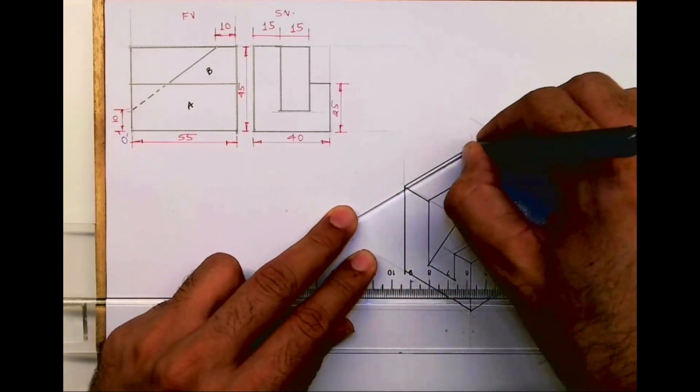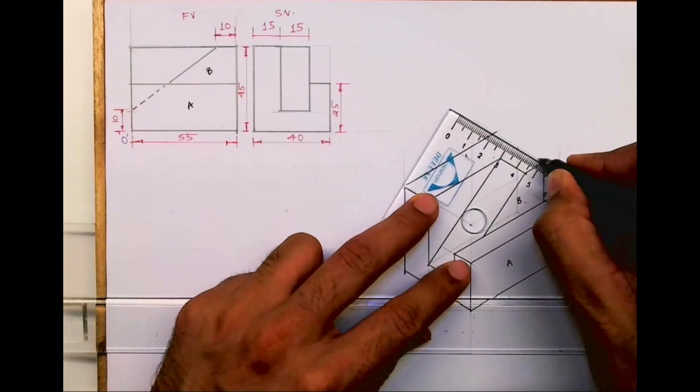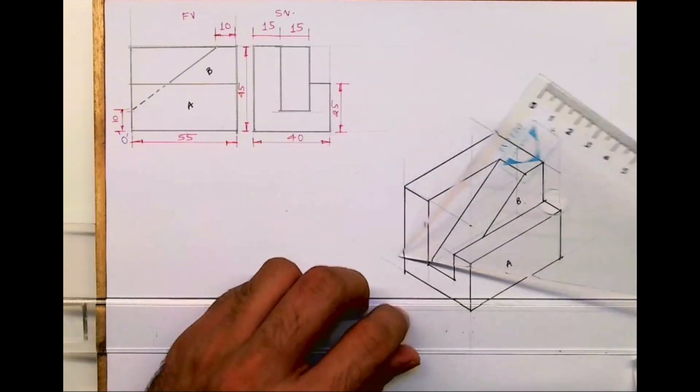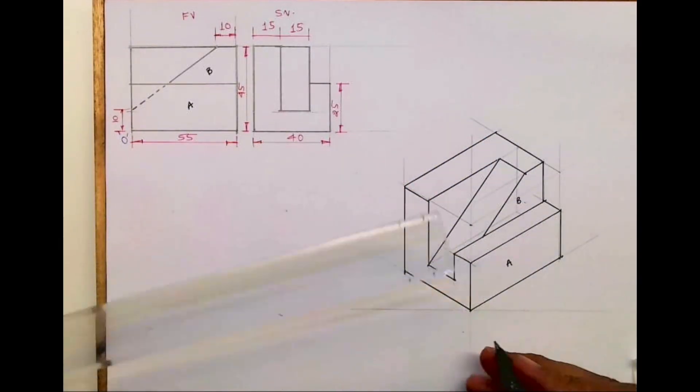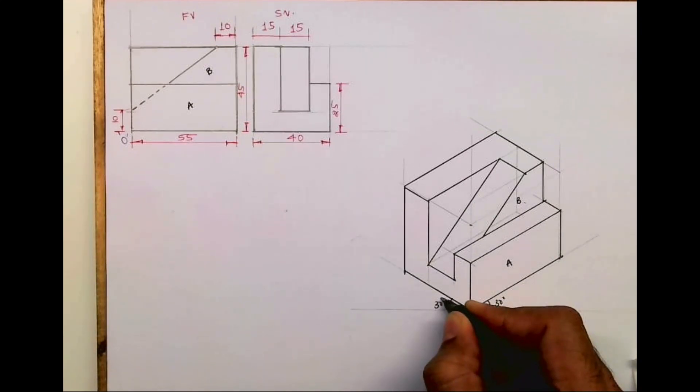And the remaining part will be dark. By doing this, we got the isometric. So I hope you people have understood this.